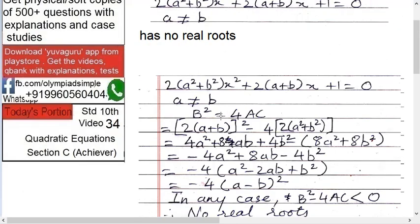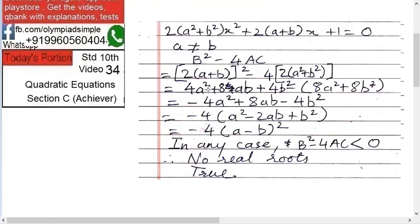In that equation, capital B is 2a + b and C is 1. So B² - 4AC means (2a + b)² - 4 × (2a² + b²) × 1. Expanding (2a + b)² gives 4a² + 4ab + b² — wait, 2 squared is 4, so we get 4a² + 8ab + 4b². Then multiply 4 into (2a² + b²) to get 8a² + 4b².